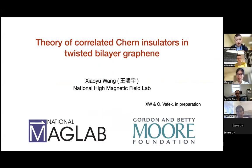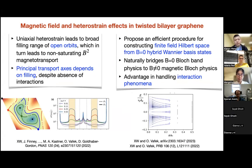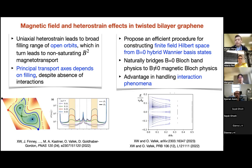Thanks very much for the invitation for the talk. I'm really honored to be here. As you can see, I changed the title at the last minute. For those of you who were still interested in the original one — understanding the magnetic field and heterostrain effects in TBG — the main result we worked out, in collaboration with David Goldhaber-Gordon's group, is that heterostrain induces open orbits that lead to non-saturating magnetoresistance, which has very good quantitative agreement with experiments.